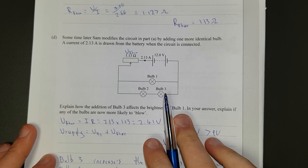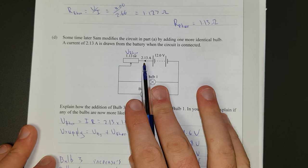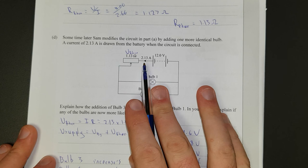Adding this bulb here increases the total resistance of the circuit. Increase the total resistance of the circuit, you decrease the total current of the circuit. Decrease of the total current means less current flying through this resistor, which means less voltage across this resistor, which means more voltage across this bulb and more voltage across these two bulbs.